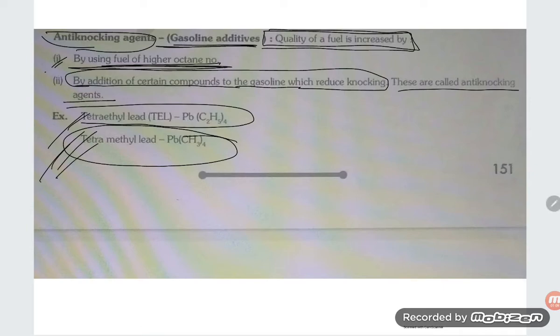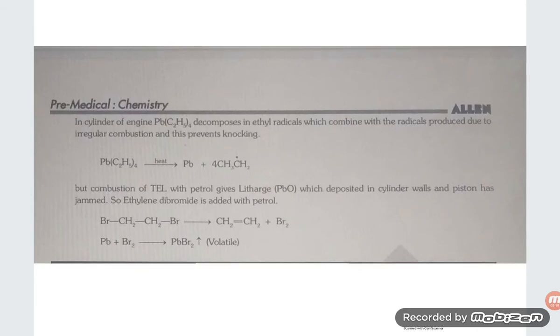The knocking sound will reduce. In the cylinder of the engine, Pb(C2H5)4 decomposes into ethyl radicals which combine with the radicals produced due to irregular combustion and this prevents the knocking.